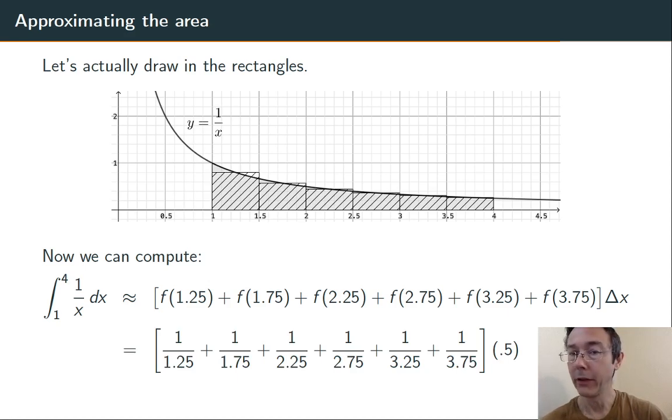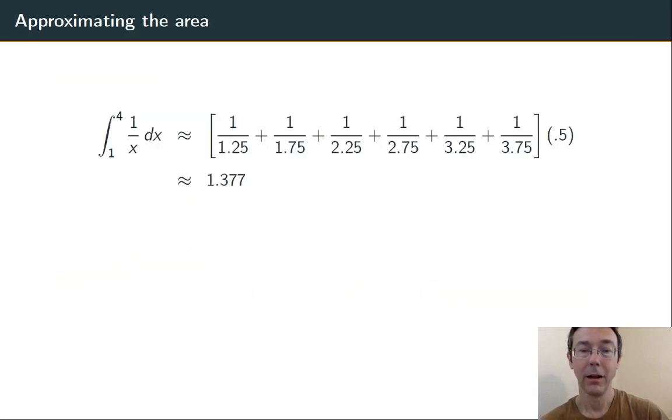As we said before, delta x is 0.5, and the midpoints are 1.25, 1.75, and so on. I plug all those in to 1 over x to get the heights of these rectangles. A bit more arithmetic, and I get an approximation for this integral of 1.377. That's what I'm guessing that the area of that shaded region was.